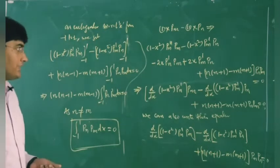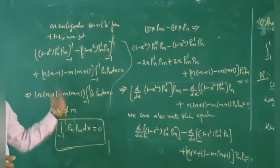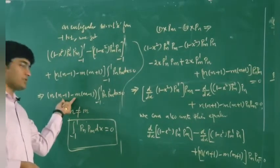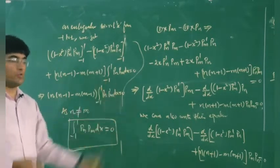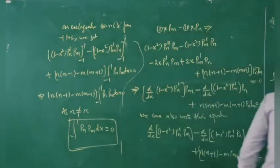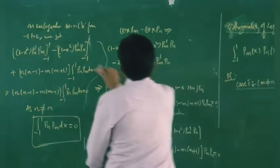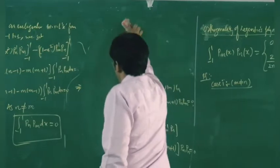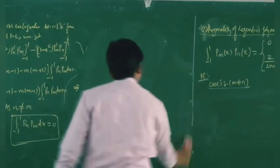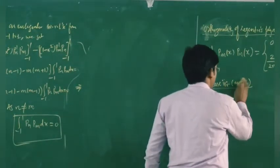Now let us discuss the second case. For case 2, we have m equal to n. We cannot use the previous method because when m = n, that bracket becomes zero, giving 0 = 0. So let us apply the generating function method.